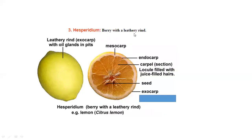This is hesperidium, a berry with a leathery rind. The outer leathery rind is the exocarp. This white layer is the mesocarp. The endocarp forms the carpels with juicy hairs inside. These are the seeds. An example is lemon, Citrus limon, a berry with leathery rind.